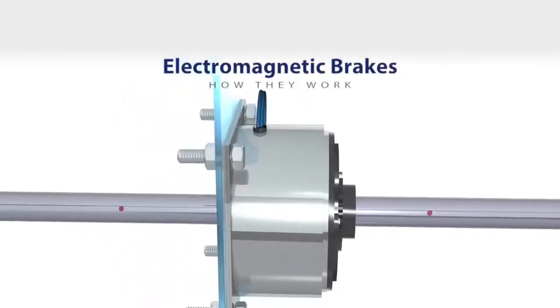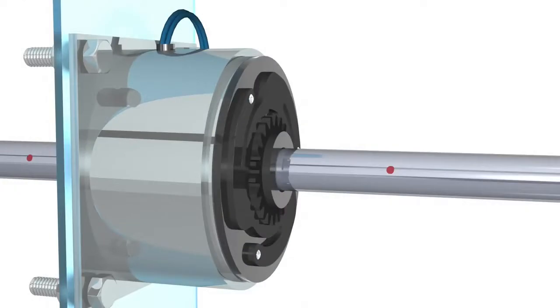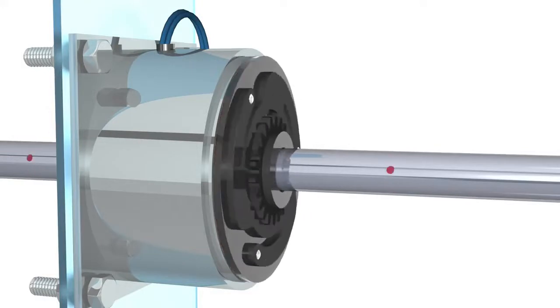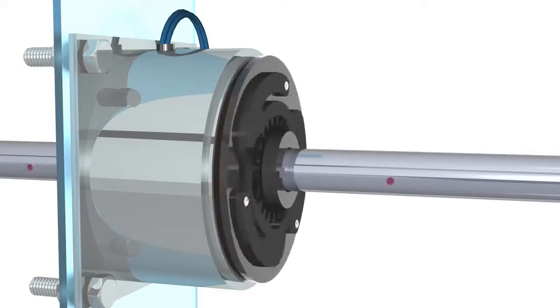Electromagnetic brakes. The majority of electromagnetic brakes use a single plate friction surface to slow or stop motion. Although there are multiple disk designs, all function in a similar manner.